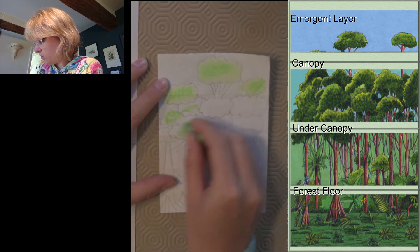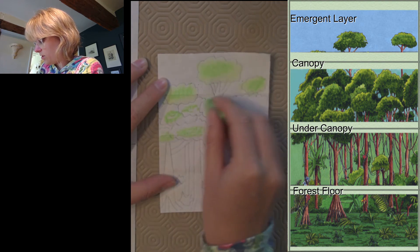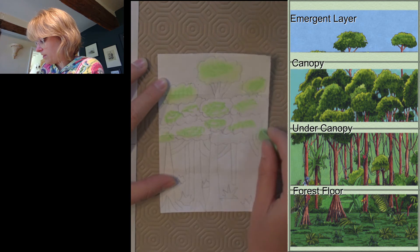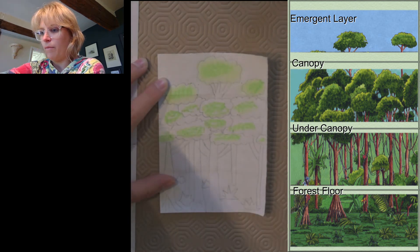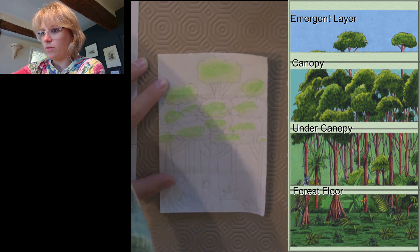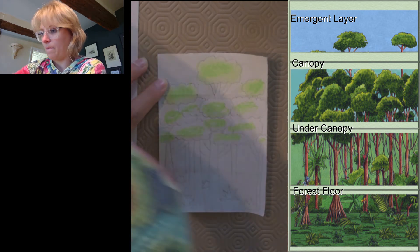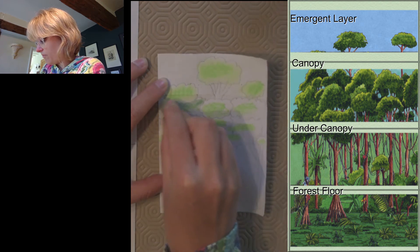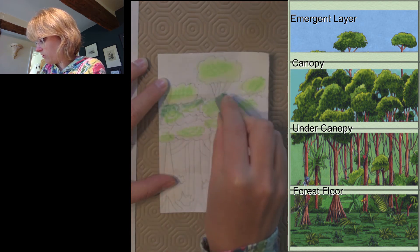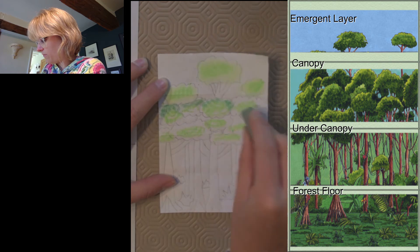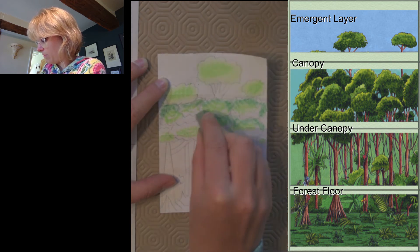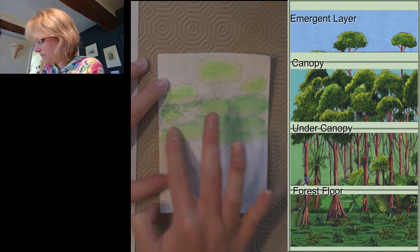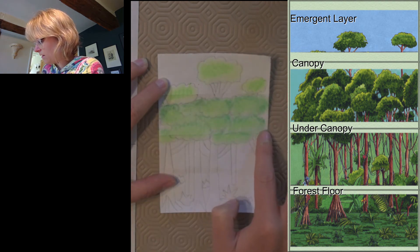You might decide to do some shading when you get to the canopy because it's getting quite busy. So some of the trees might sort of be blocking the other trees. So you might decide to make those trees a little bit darker along the tops of them, maybe.